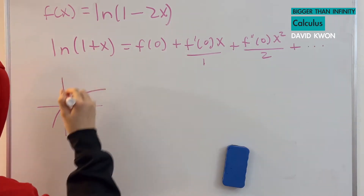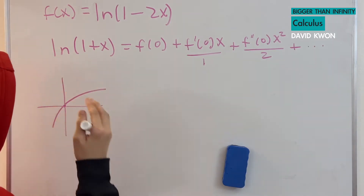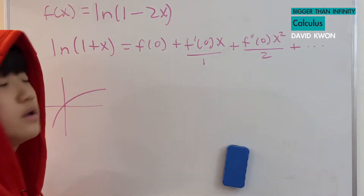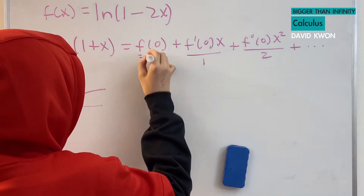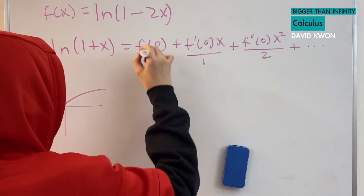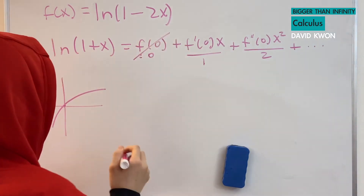So when x is 0, what is f(0)? That's just 0. So we know that this term is equal to 0, which is just going to cancel out.